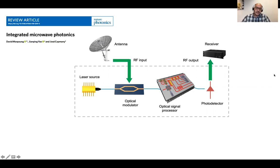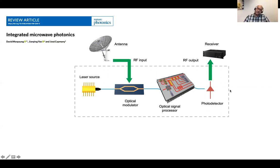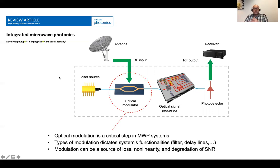What I'm showing here is a figure from the paper which is a canonical topology of an integrated microphotonic system, where we have a laser source, an optical modulator that encodes the information in the RF domain to the optical domain, a chip to process the signal, and a photodetector to retrieve back the RF information from the optical signal. I would like to draw your attention to this optical modulator.